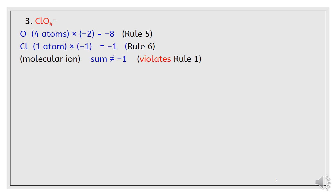Example number three is perchlorate, ClO4 minus. The overall charge is -1. We have four atoms of oxygen multiplied by -2. The oxidation state of oxygen atoms equals -8. This is rule number five. And Cl atom multiplied by -1, the oxidation state of chlorine atom equals -1. This is rule number six. And as you note, the summation of -8 and -1 is not equal to -1. So, this violates rule number one.